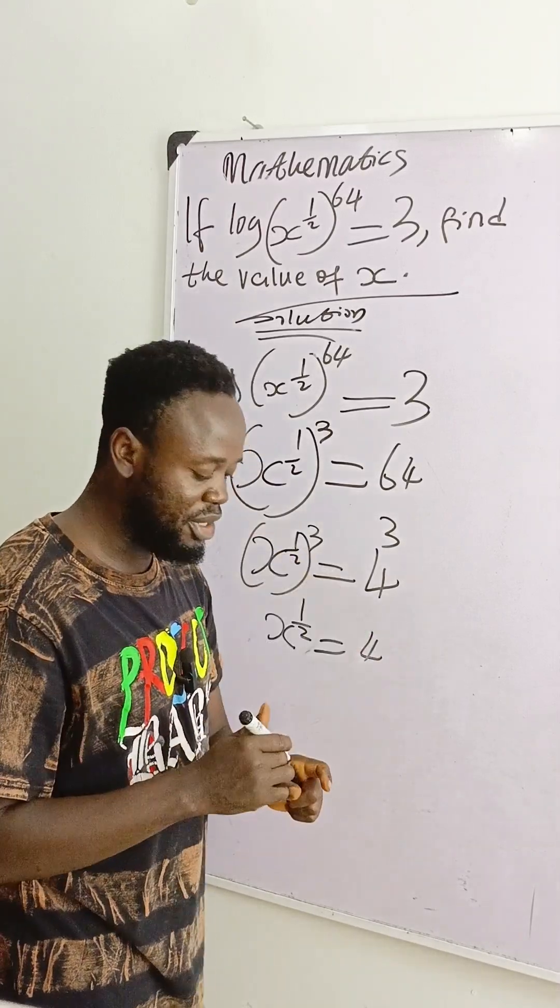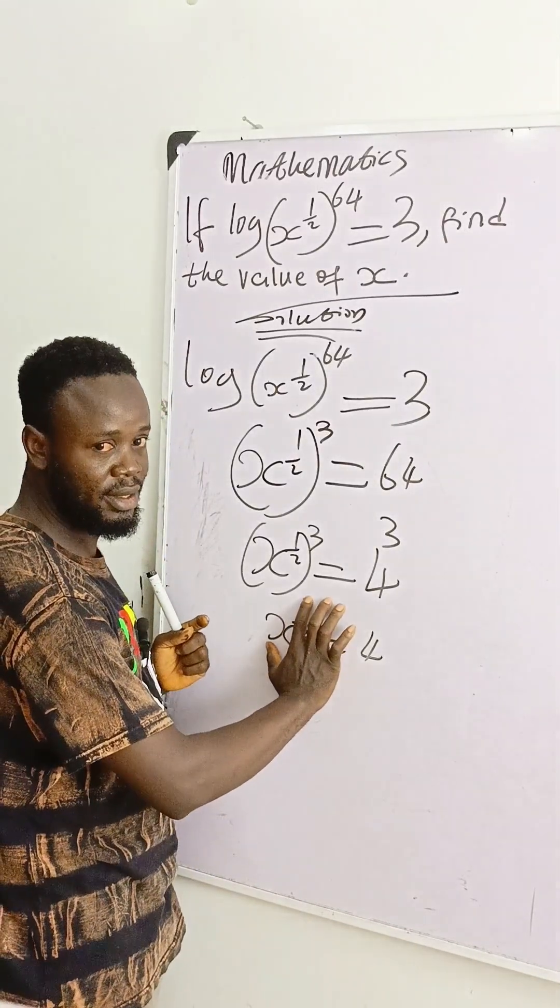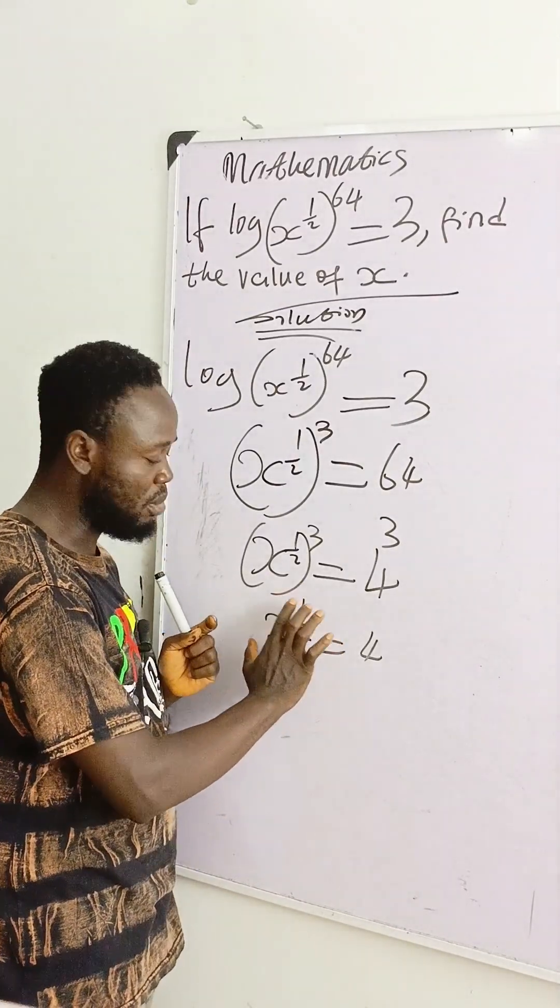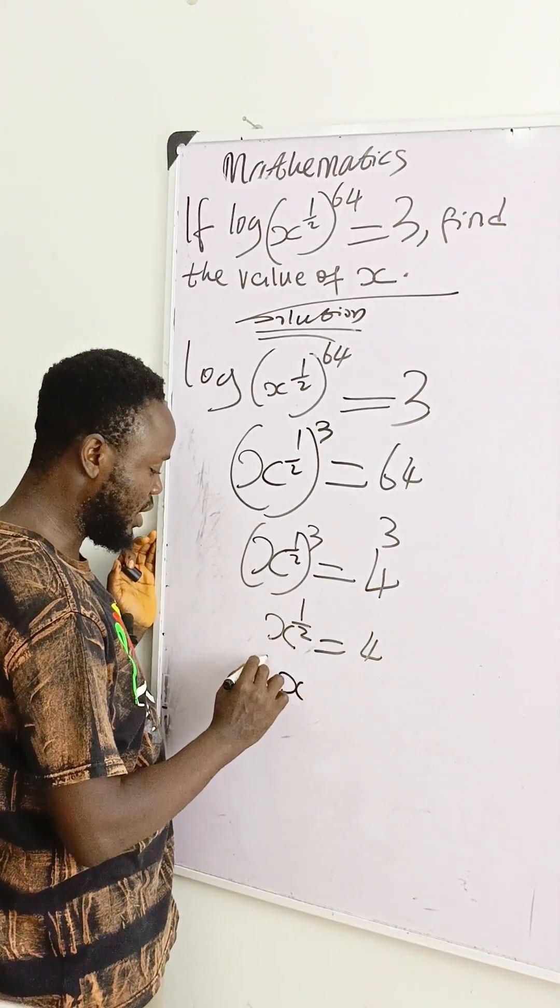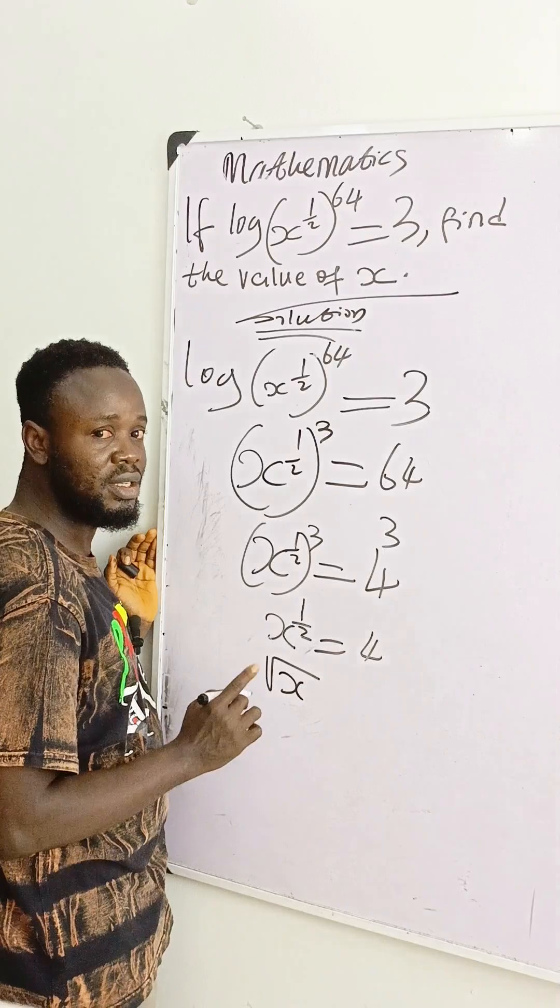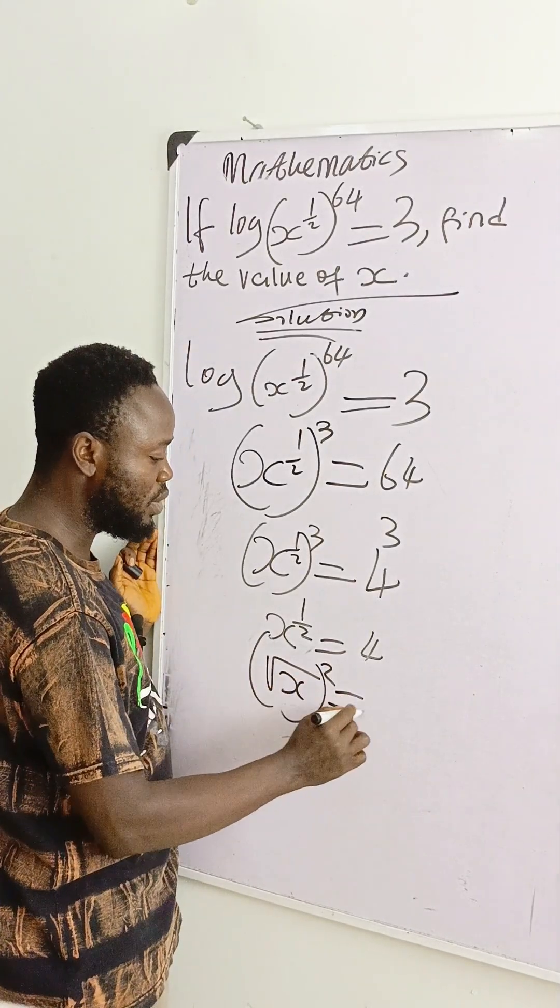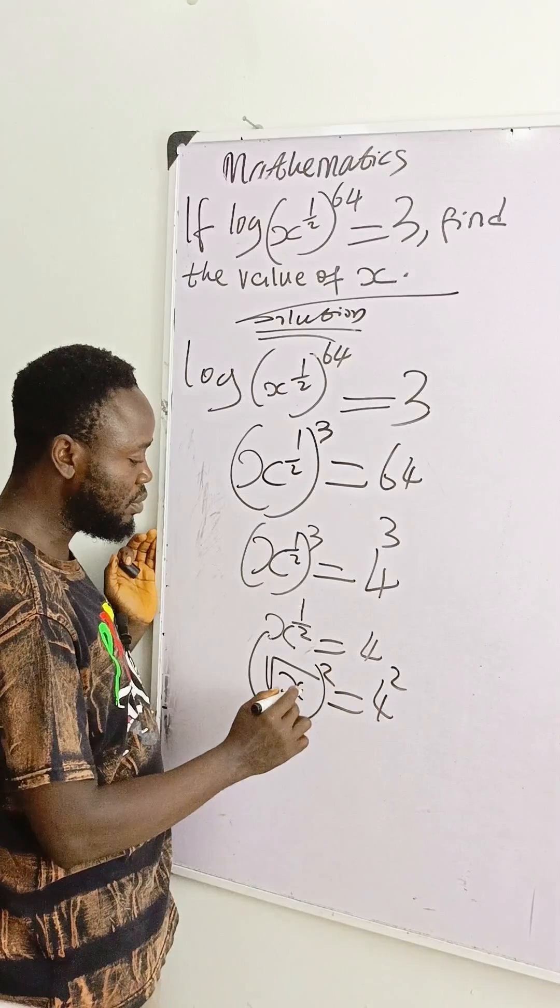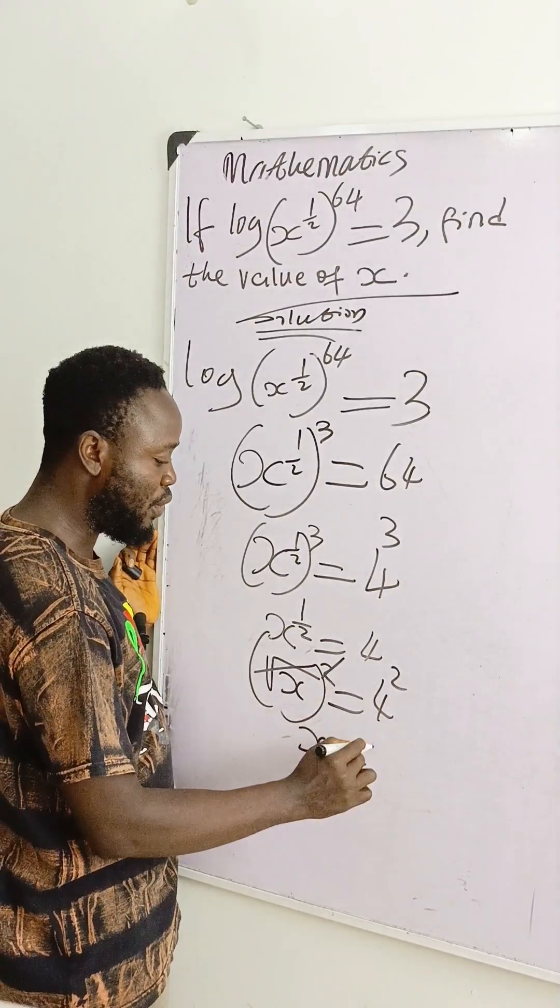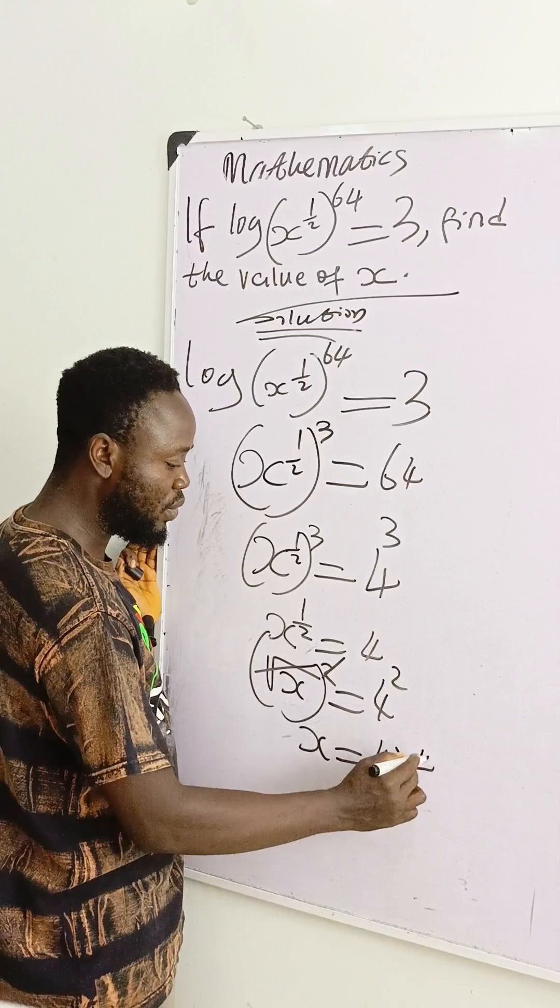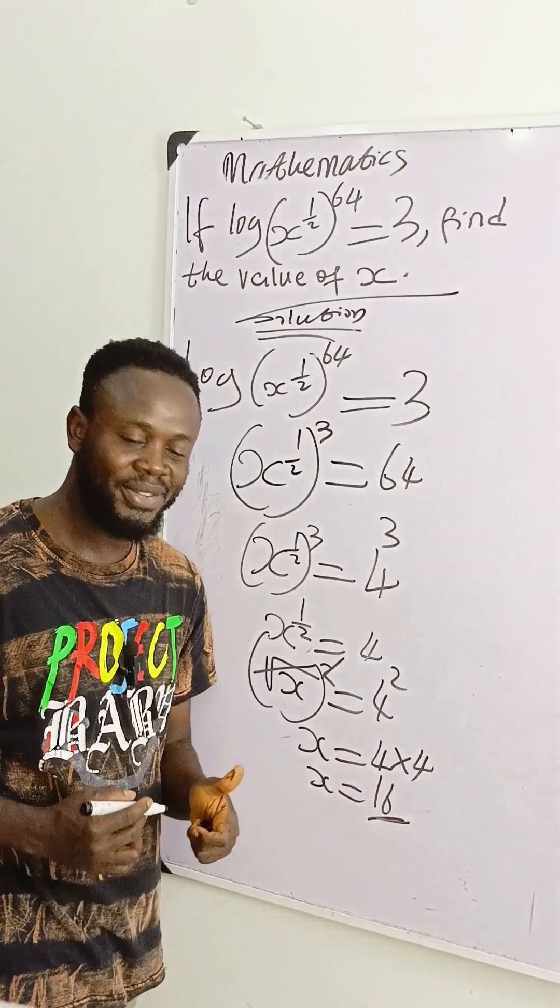Anything raised to power 1/2 means square root of that, so this is square root of x. To remove the square root, I'll square both sides: square root of x raised to power 2 equals 4 raised to power 2. So x equals 4 squared, which is 4 times 4 equals 16. That's our final answer. Thank you.